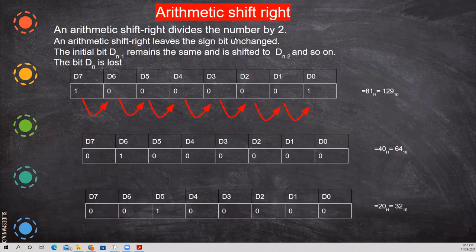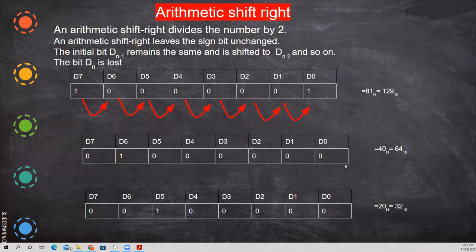For arithmetic shift right, it divides the number by 2. The bits are moved to the right. The bit D0 is lost during this shift.